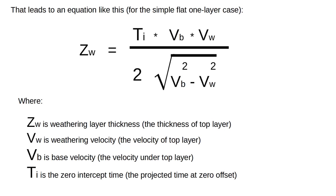That leads to an equation for the simple flat one-layer case, where zw is the weathering layer thickness (the thickness of the top layer), vw is the weathering velocity (the velocity of the top layer), vb is the base velocity (the velocity under the top layer), and ti is the intercept time, which is the projected time at zero offset.